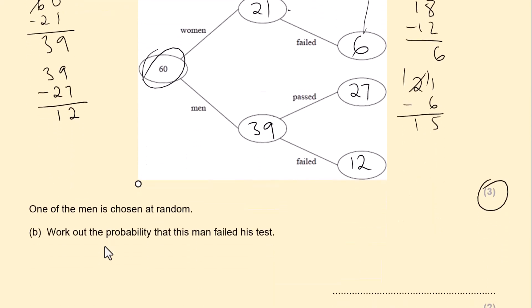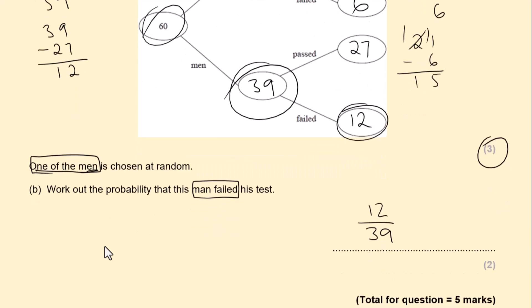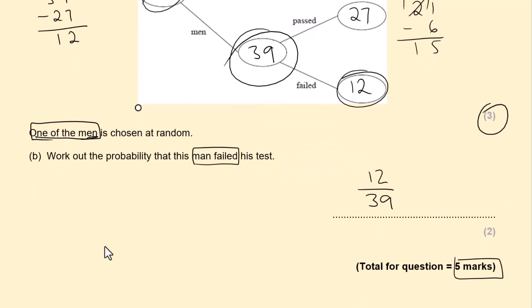One of the men is chosen at random. Work out the probability that this man failed his test. So 12 failed the test. 12 men. And one of the men is chosen at random. Not the total people. So 39 men. So 12 out of 39. Just be careful with the question. One of the men is chosen at random. And men failed the test. So 12 out of 39 is the answer. This question was worth 5 marks in total.